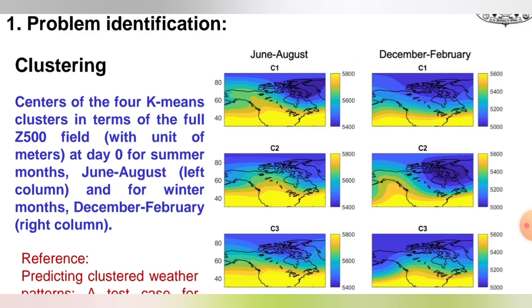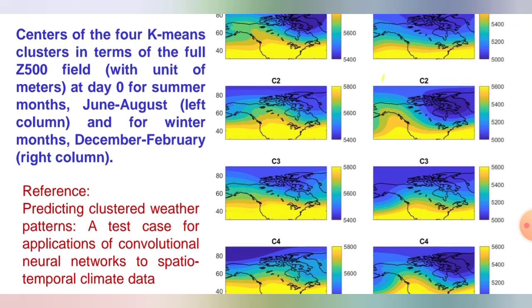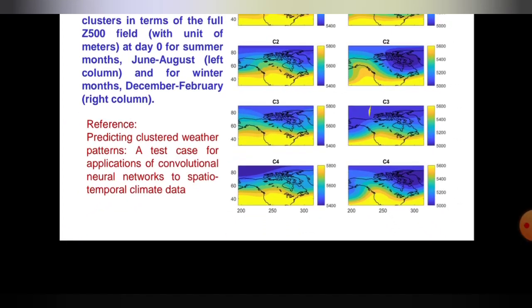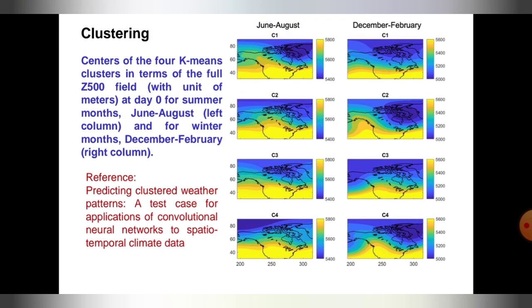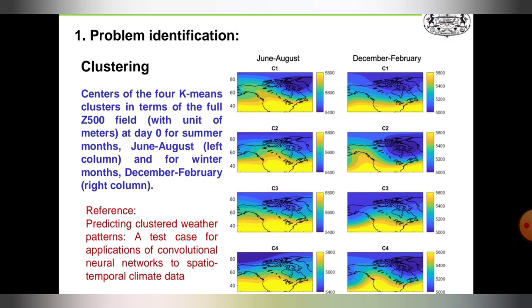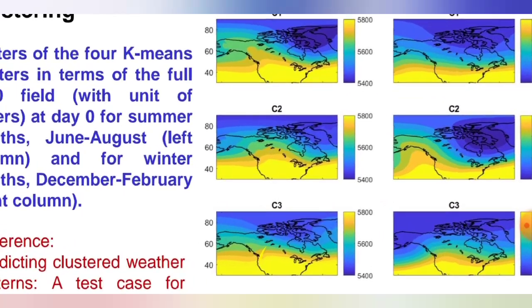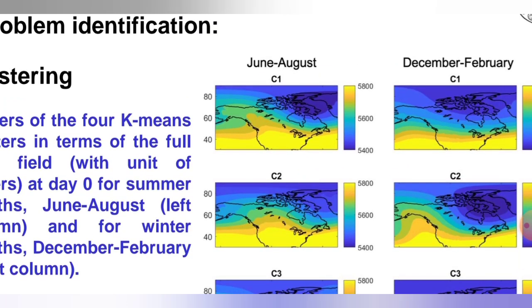Here they have given June to August with C1, C2, C3, and C4 clusters. For June to August clustering in the weather forecast dataset, the heat wave patterns are shown. C1 is for June, C2 for July, C3 for August.